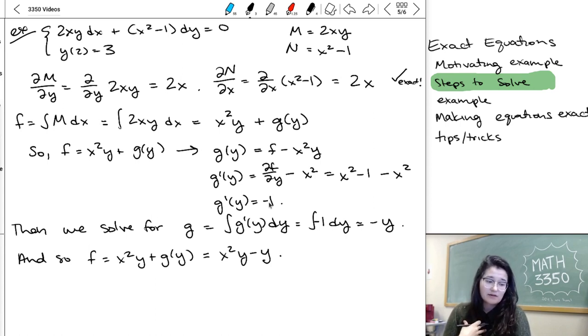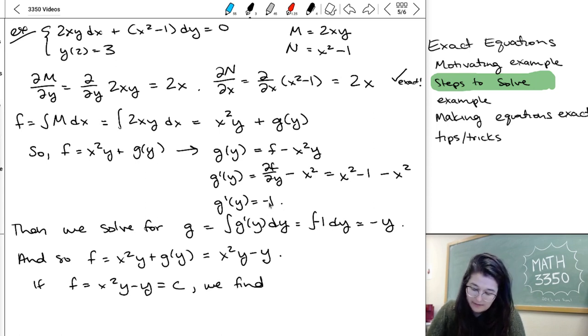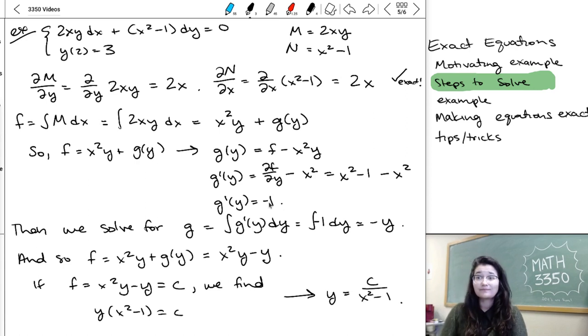For us to write the solution, we just need to take it one step further and set f equal to a constant, so we can find a general solution. And then we go ahead and try to solve for y. So, we're going to have y times x squared minus 1 on the left here. So that just means that y is c over x squared minus 1, and that's going to be the general solution for this specific problem.